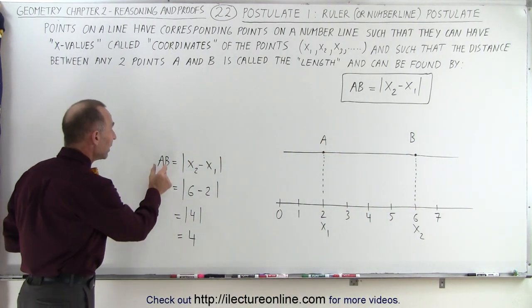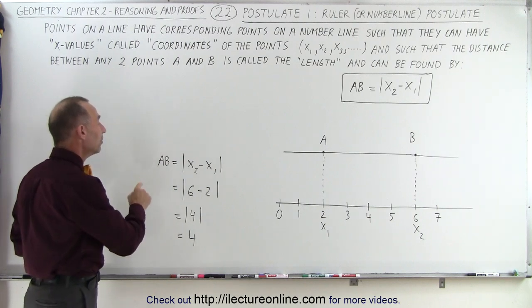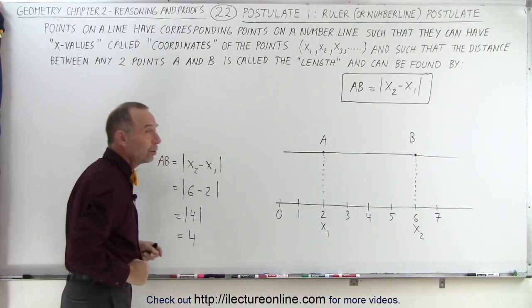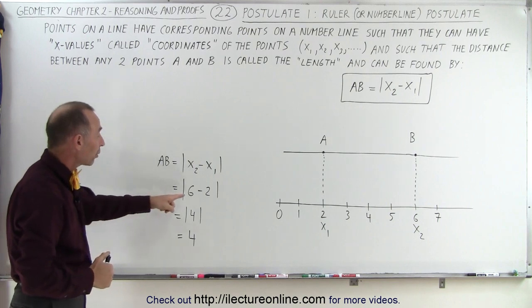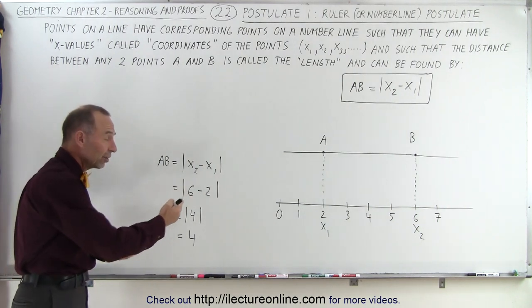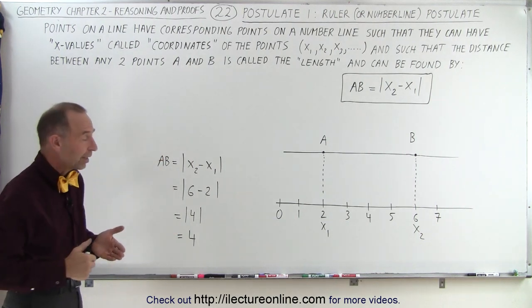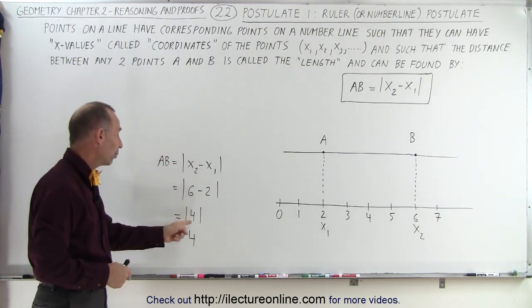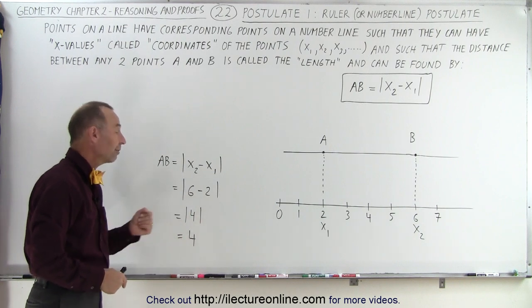We can say that the length between A and B is equal to the absolute value of the difference between the two coordinates. We subtract one from the other, and it doesn't matter if we go 6 minus 2 or 2 minus 6, since we're taking the absolute value anyway. Here you can see that 6 minus 2 is 4. Take the absolute value, you get 4.